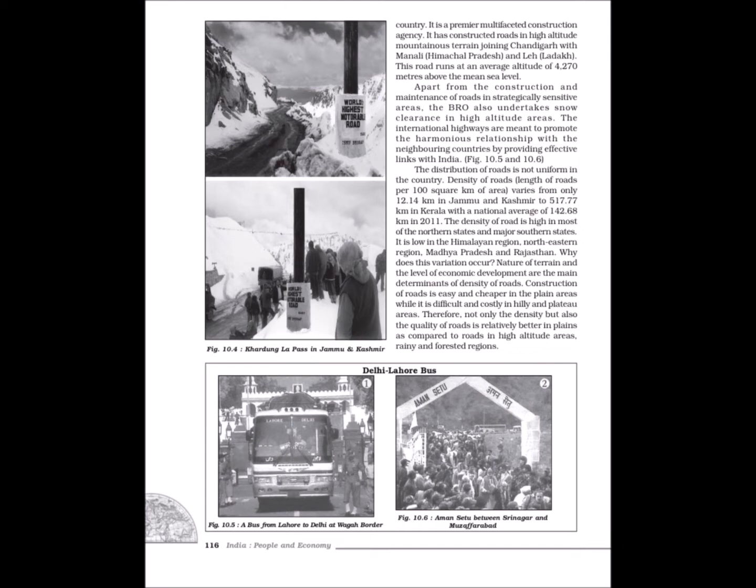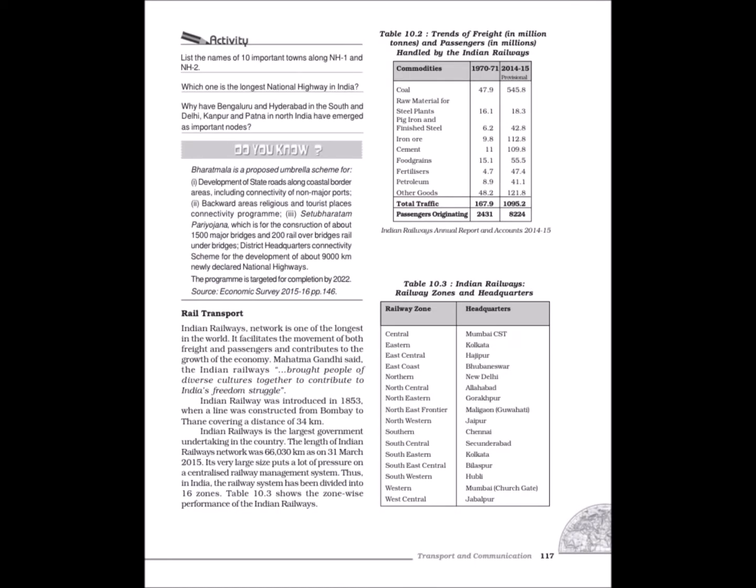Rail Transport: Indian Railways network is one of the longest in the world. It facilitates the movement of both freight and passengers and contributes to the growth of the economy. Mahatma Gandhi said that Indian Railways brought people of diverse cultures together to contribute to India's freedom struggle. Indian Railway was introduced in 1853 when a line was constructed from Bombay to Thane covering 34 km. Indian Railways is the largest government undertaking in the country, with a network of 63,221 km. Due to its very large size, the railway system has been divided into 16 zones.